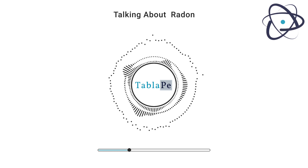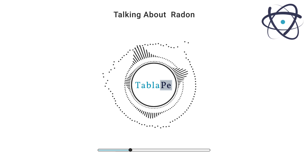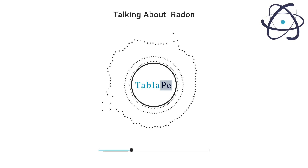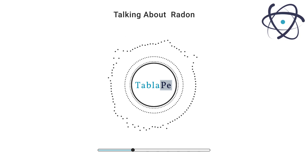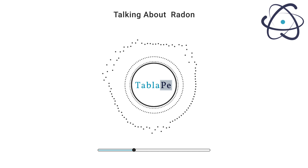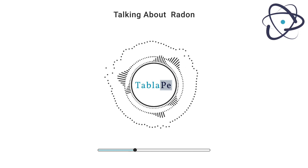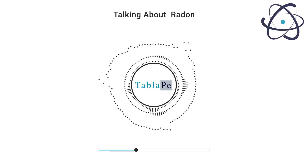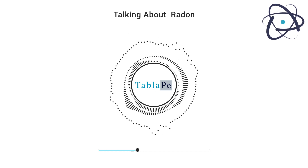Radon is a product of the radioactive decay of heavier elements like uranium and thorium found in Earth's crust. As uranium and thorium break down, they release radon gas, which can migrate through soil and enter buildings. This natural occurrence means radon can be found almost everywhere on Earth, but its concentration varies greatly from one location to another.